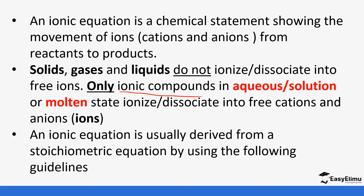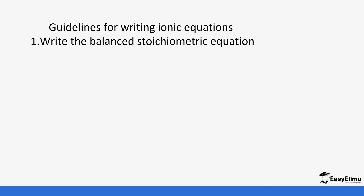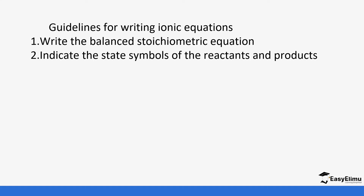An ionic equation is usually derived from a stoichiometric equation by using the following guidelines. Remember in our previous lesson we talked about stoichiometry and how we use it to get the masses of reactants and products. A stoichiometric equation is one that is balanced with correct symbols. So we are going to derive ionic equations from those stoichiometric equations. First, we need a balanced stoichiometric equation with correct state symbols for both the reactants and products. The correct state symbols will enable us to know if those substances will ionize or not.